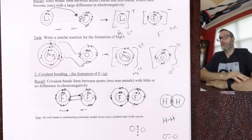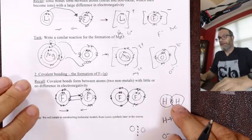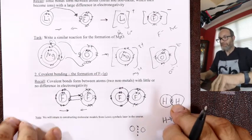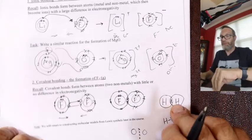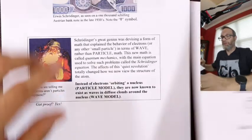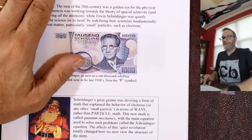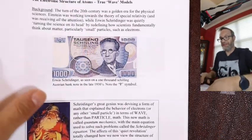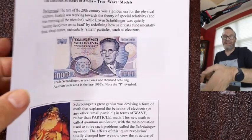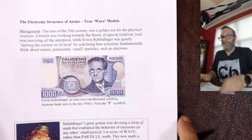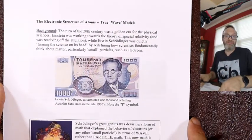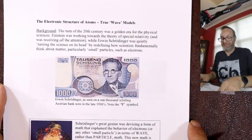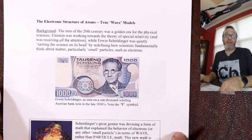That's it for part one. In 1926, things turned around and we started to think about the true nature of matter — the quantum wave model. That's going to be in part two, so I'll see you then.